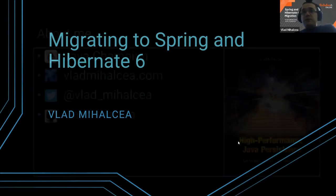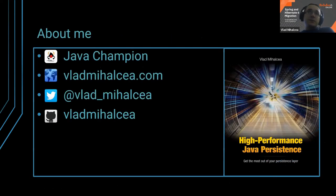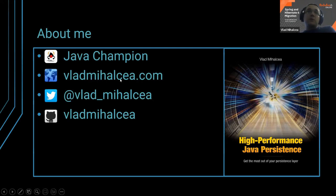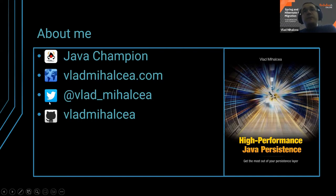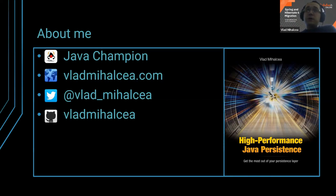A little bit about myself: my name is Vlad Mihalcea. I'm an independent Java Champion. I used to work for Red Hat on the Hibernate project. Now I mostly focus on writing on my own blog — I try to blog every week and share findings I discover while using Spring and Hibernate. I'll also share some of those findings in this presentation. My Twitter handle and GitHub repository will be referenced, and you can use those open source projects as a reference since they're available on GitHub with full Git log access.